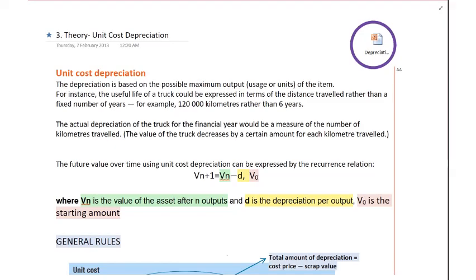This is our last bit of work on depreciation. We're going to look at unit cost depreciation. The difference in this one is it's not about when something becomes a scrap value — it's based on the idea of possible maximum output, usage, or units, whatever it happens to be.